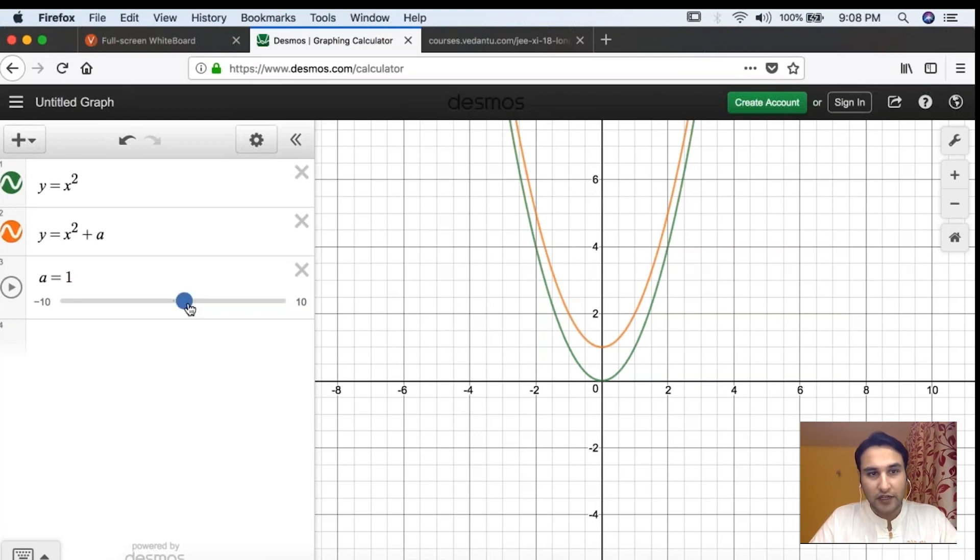When this a is 0, you have this graph y = x². If you increase the a, do you see the graph goes up? For example, if I do x² + 2, see the graph went up along the y-axis. The exact same graph is moving up if you are adding something with x².